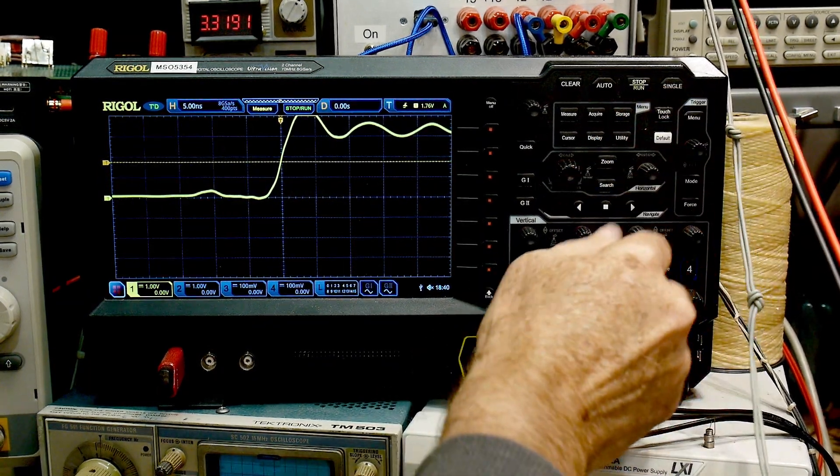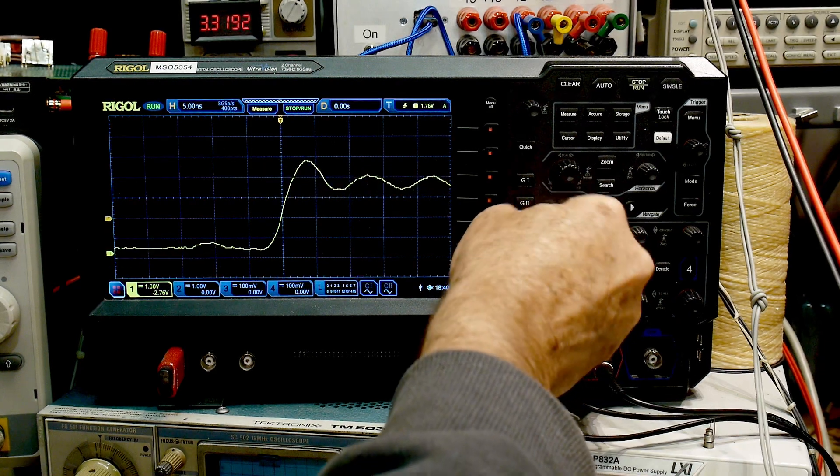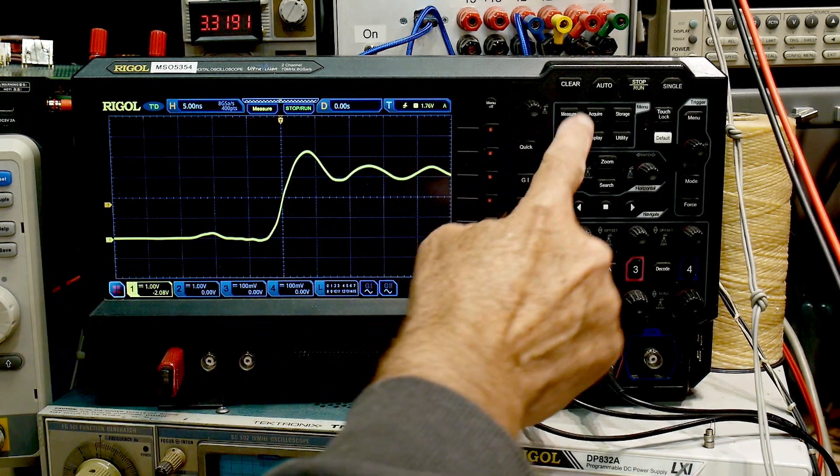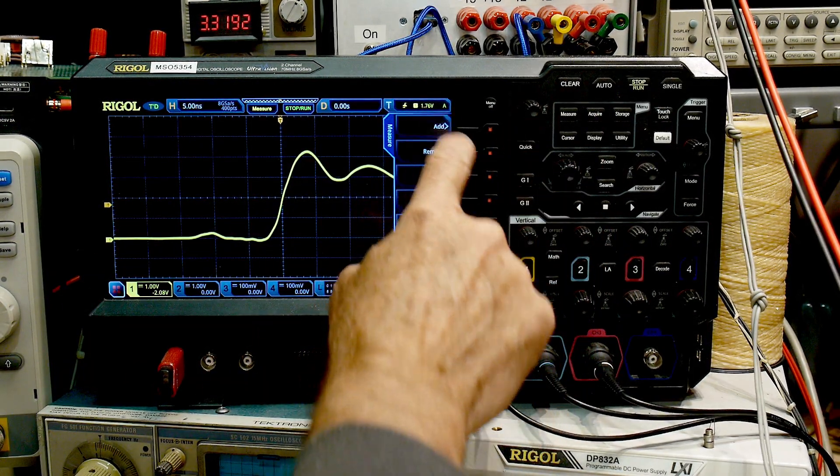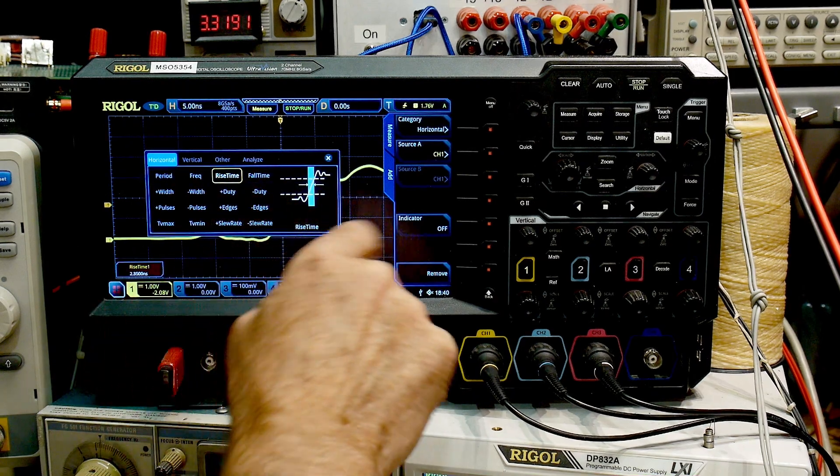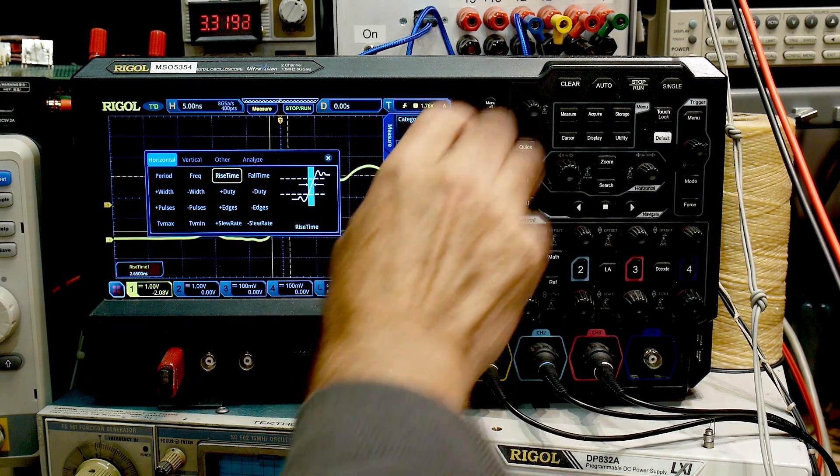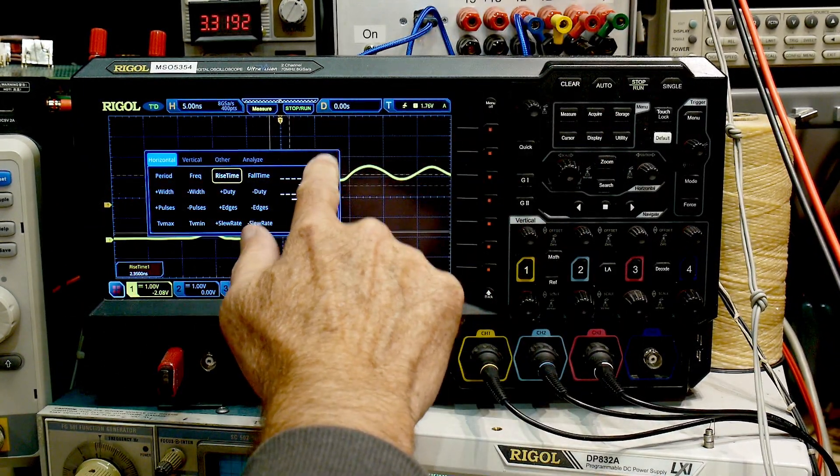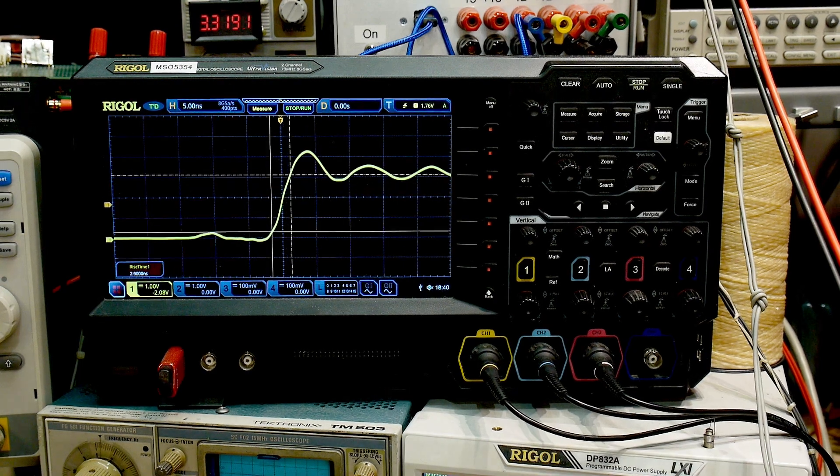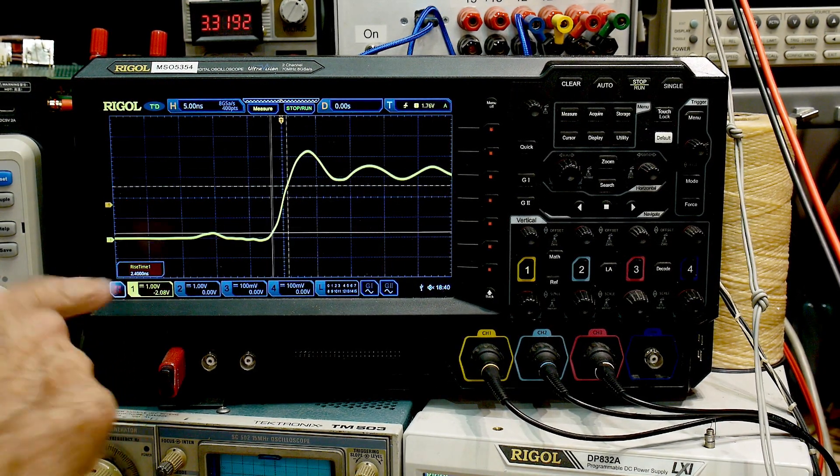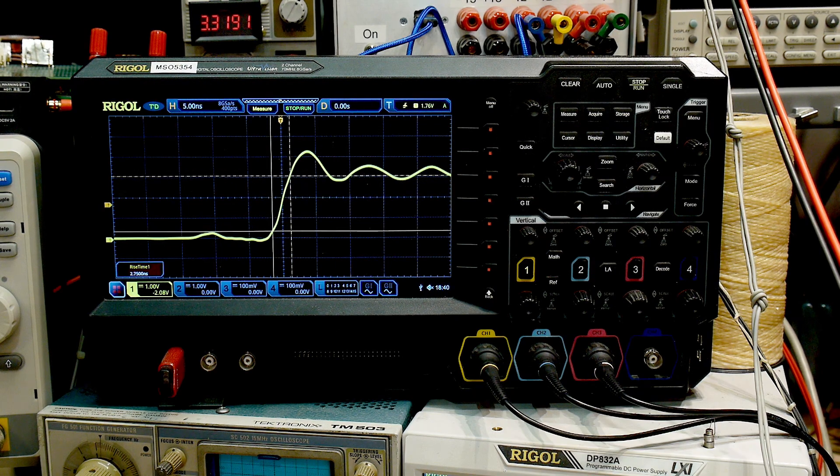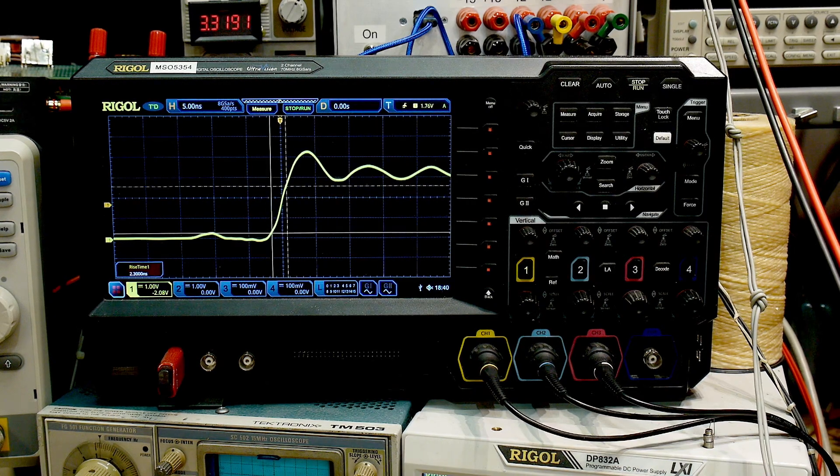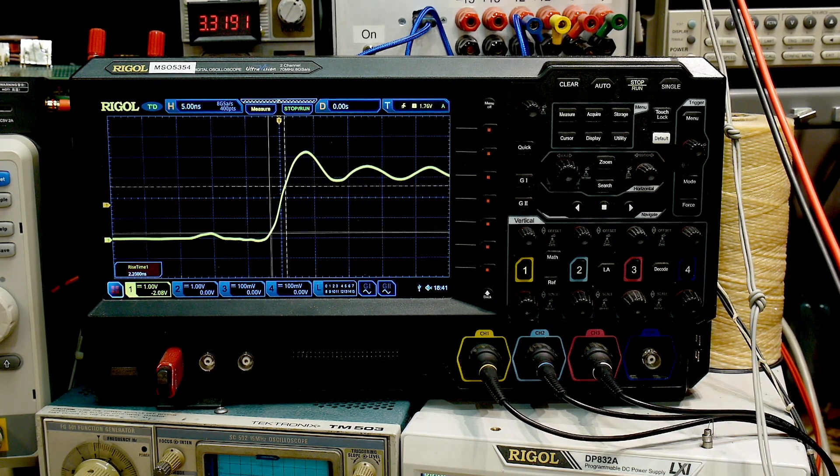Let's trigger up here somewhere. There we go. Let's move down the ground so we can see what's going on here. There we go, nice. We can measure the rise time. Major, rise time, let's turn the indicators on. There we go, so we're getting, reading about two point, it's rattling around a bit but it's around 2.7 nanoseconds, something like that.